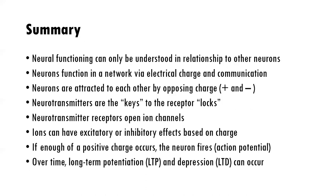In summary, you learned that neural functioning can only be understood in relationship — to brain structures and regions, and between neurons. You learned that neurons function in a network via electrical charge and communication; that neurons are attracted to each other by opposing charge; that neurotransmitters are the keys to receptor locks that then open ion channels; that ions can have excitatory or inhibitory effects based on their charge; and that if enough positive charge occurs, the neuron fires — known as an action potential. Over time, with enough charge and firing, you get long-term potentiation or depression. That wraps up this video lecture.